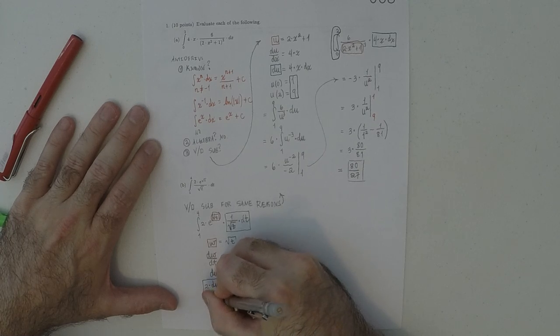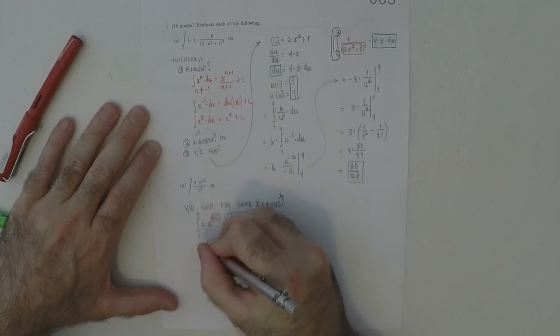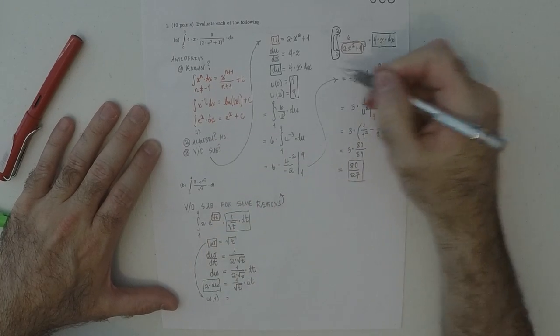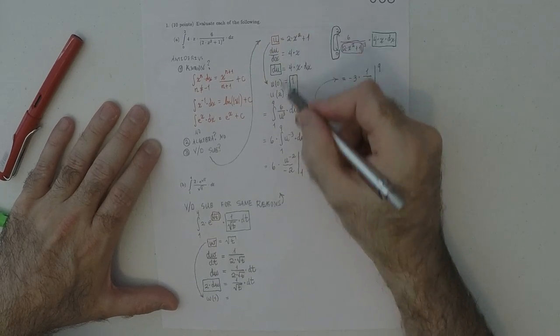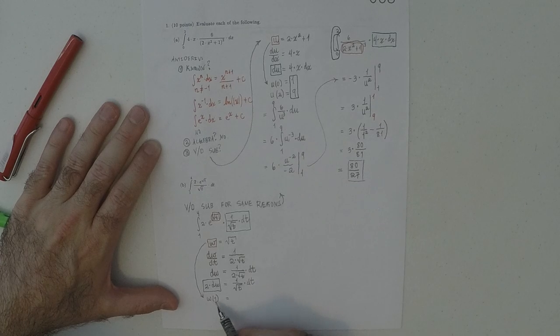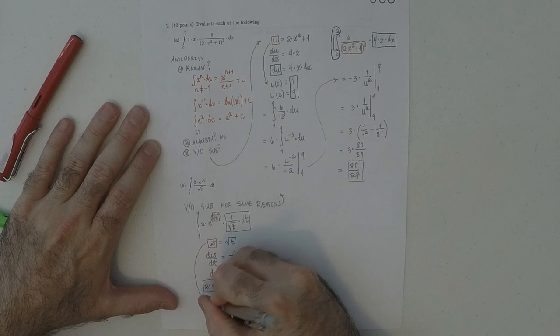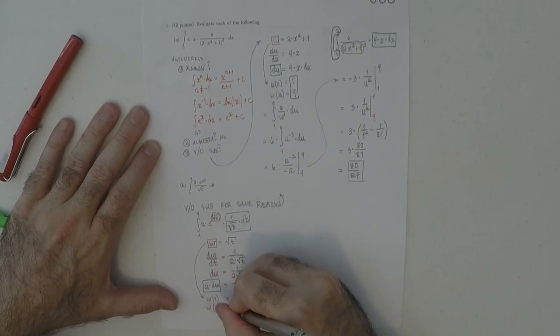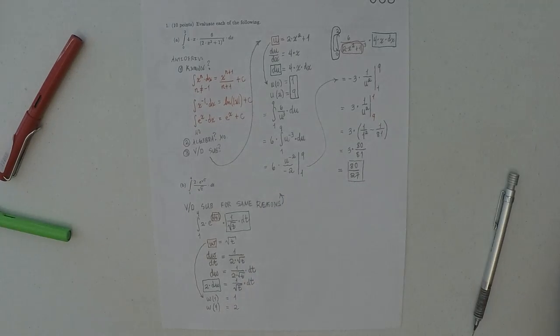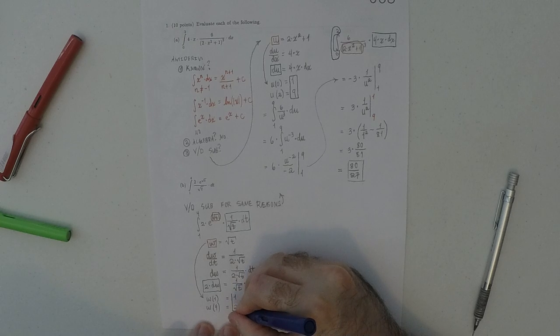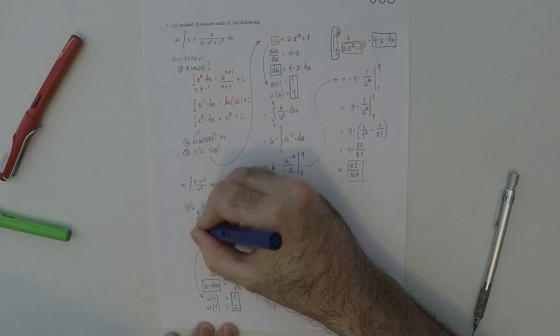So, w, when t is 1, so, using that, you know, this right here. And if it wasn't clear here, these tell you how to do that. So, when you plug in t is 1, you get 1. And when you plug in t is 4, you get 2. So, this information is how we deal with this bit.